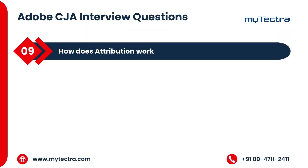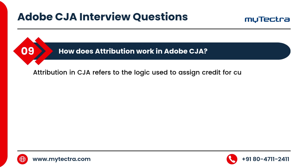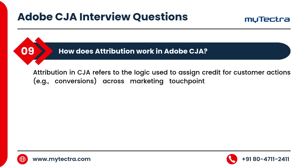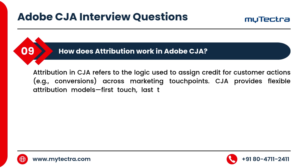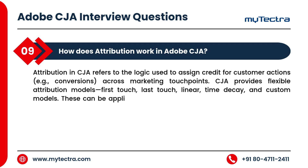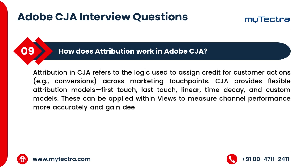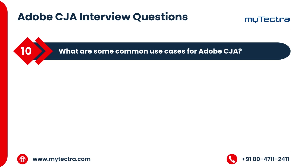How does attribution work in Adobe CJA? Attribution in CJA refers to the logic used to assign credit for customer actions, for example conversions, across marketing touchpoints. CJA provides flexible attribution models — first touch, last touch, linear, time decay, and custom models. These can be applied within views to measure channel performance more accurately and gain deeper insights into customer behavior across the journey.